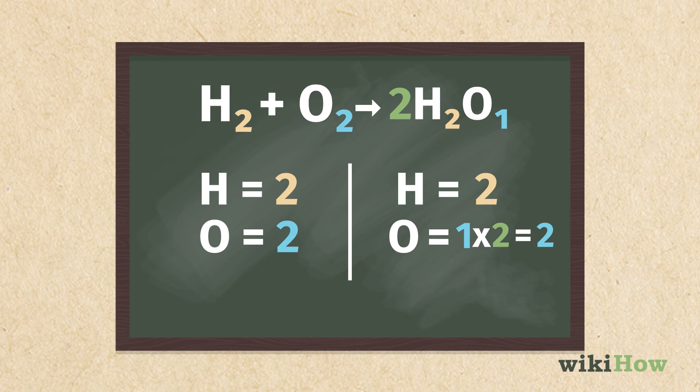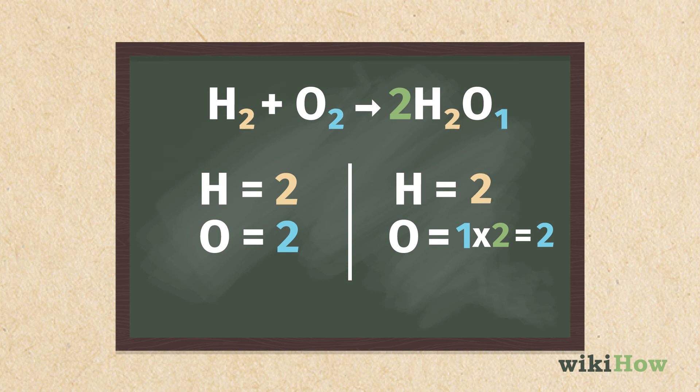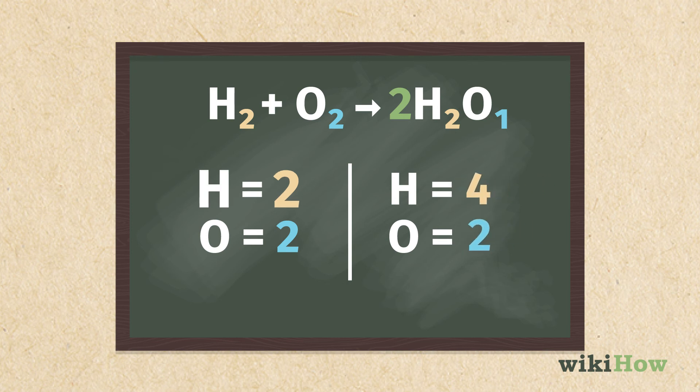Now, however, subscripts can't be changed and are always multiplied by the coefficient, which means there are now four hydrogen atoms on the right side of the equation and only two hydrogen atoms on the left side.